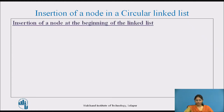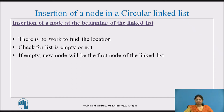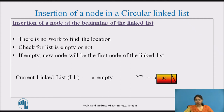Let's see insertion of a node at the beginning of the linked list. There is no need to find the location; we only need to check if the linked list is empty or not. If the linked list is empty, the new node will be the first node. The ll pointer is assigned to the new node, and the next part of this new node is made to point back to the ll pointer, making it a circular linked list.